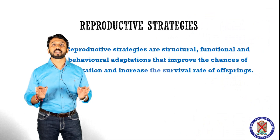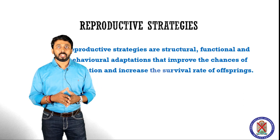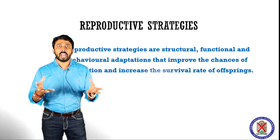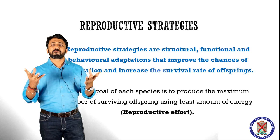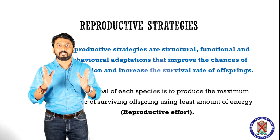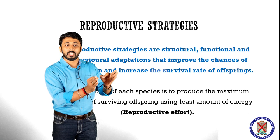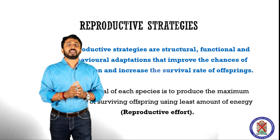Let us have a look at what is a reproductive strategy. A reproductive strategy is a structural, functional, or behavioral adaptation of an organism to enhance its fitness, to enhance the chance of fertilization, or to increase the adaptive value of an organism. The ultimate goal of every organism is to have the maximum number of surviving offspring while spending the least amount of energy. We can call it reproductive effort.